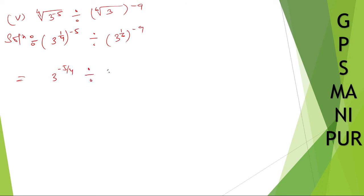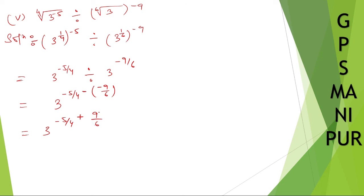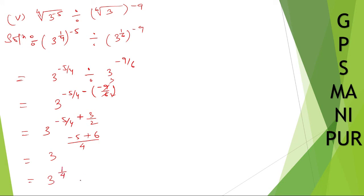With a division sign and the same base three, we subtract the powers: minus five by four minus minus nine by six, which becomes minus five by four plus nine by six. Simplifying nine by six gives three by two. The LCM of four and two is four, so minus five by four plus six by four gives one by four. The answer is three to the power one by four, which can also be written as the fourth root of three.